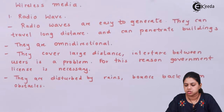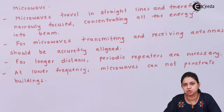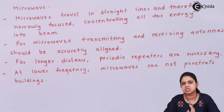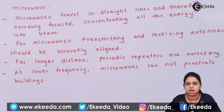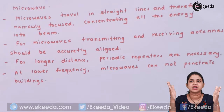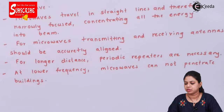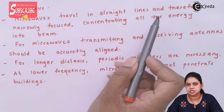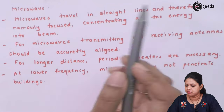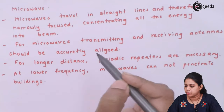The next category is microwave. Unlike radio waves, microwaves travel only in a straight direction. This means we have to align the receiver and transmitter antennas in a straight line of sight. Because microwaves travel in a straight line, they are narrowly focused, concentrating all the energy into a beam.